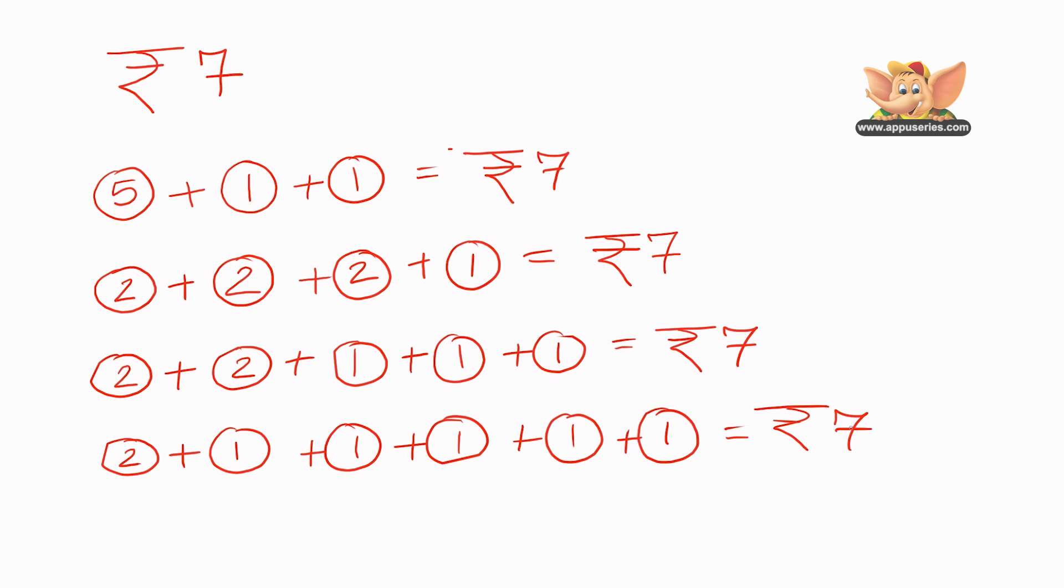And now, for the last combination, 1 rupee coin, another 1 rupee coin, and another 1 rupee coin. One more. One more. Another one. Let's count them. That's 1, 2, 3, 4, 5, 6. One more rupee here, 7. Equals 7 rupees.